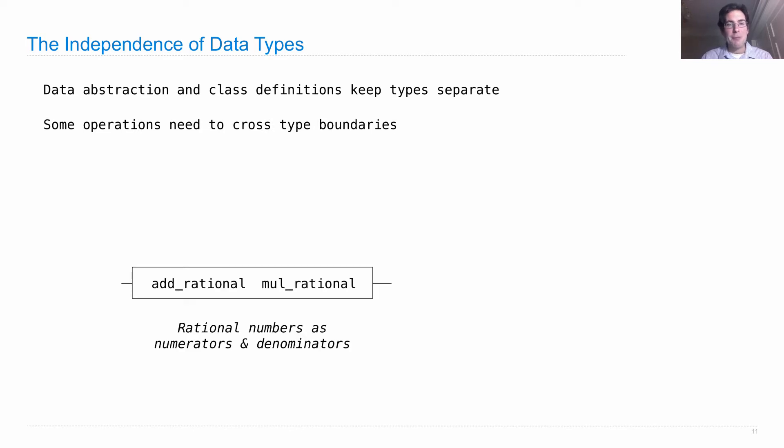We have add_rational and mul_rational, which operate on rational numbers, which know that rational numbers are numerators and denominators. We have add_complex and mul_complex, which know that complex numbers are two-dimensional vectors.